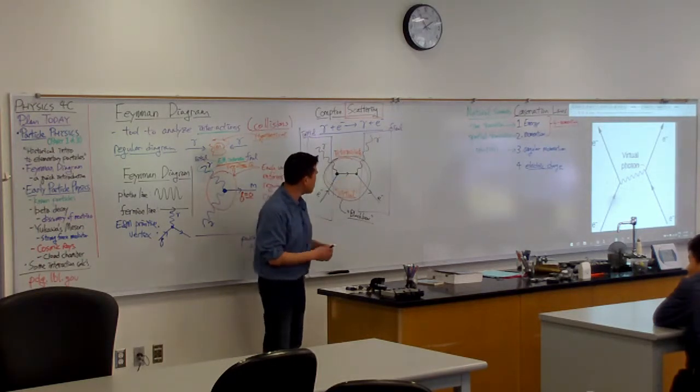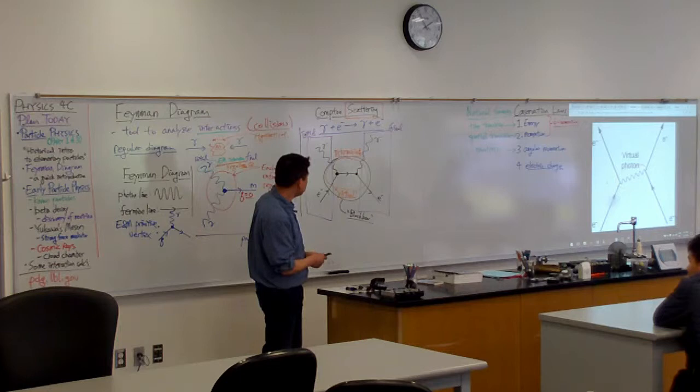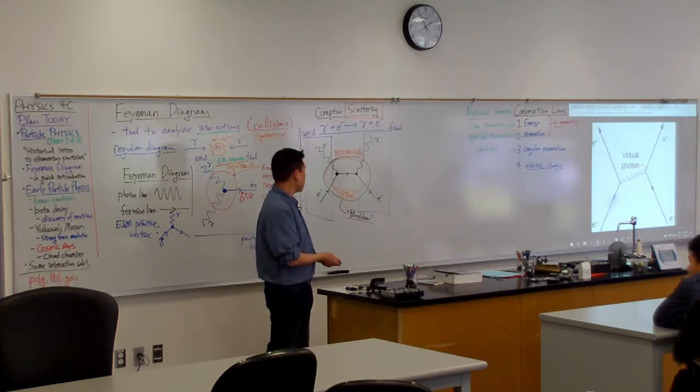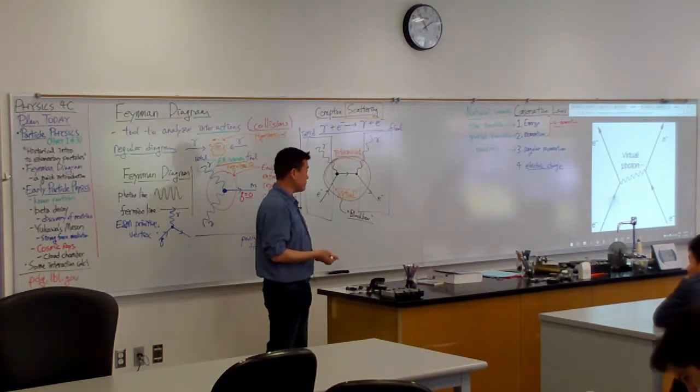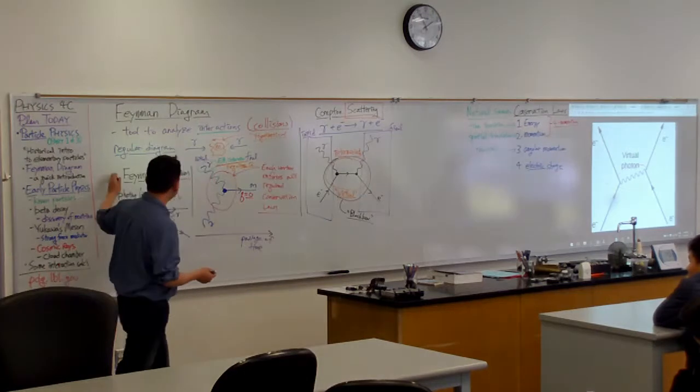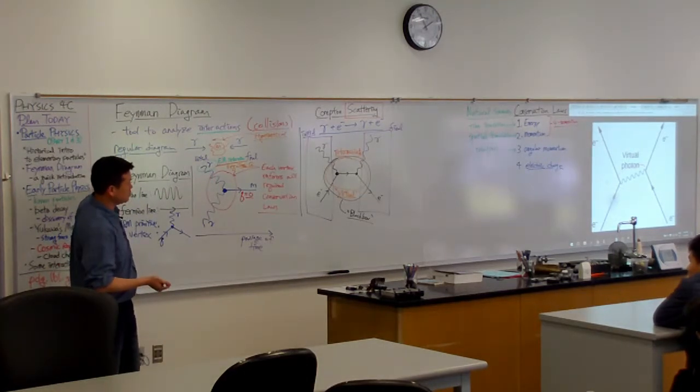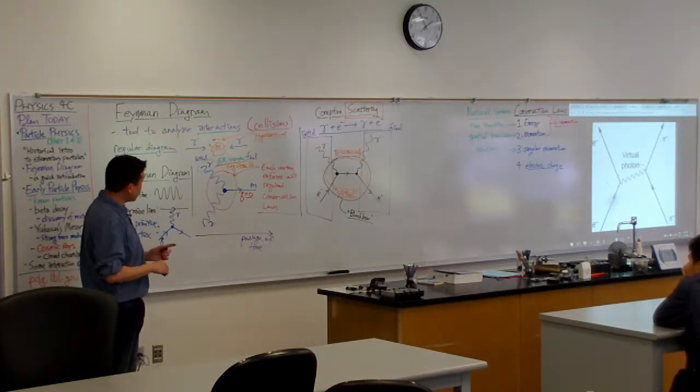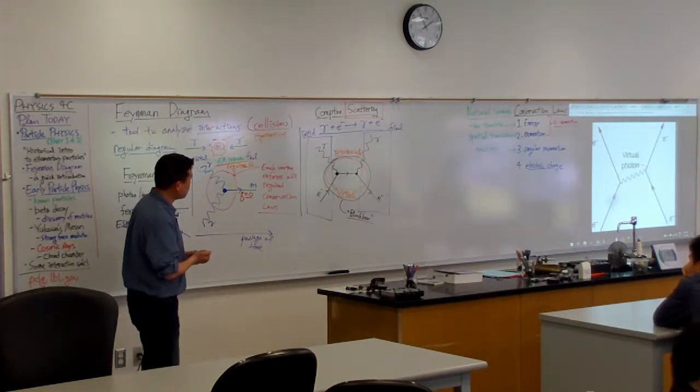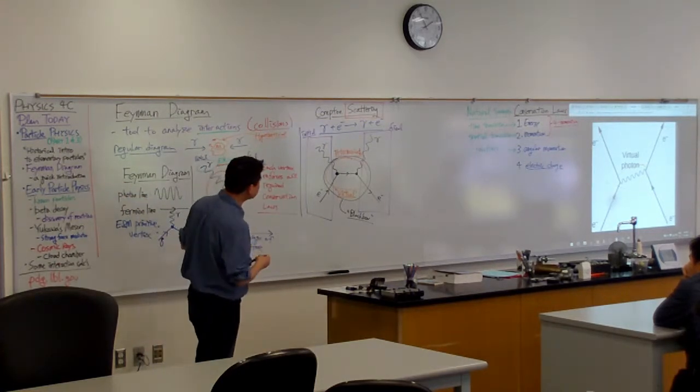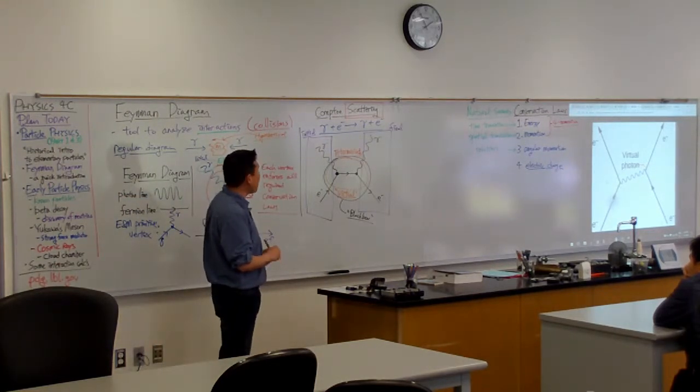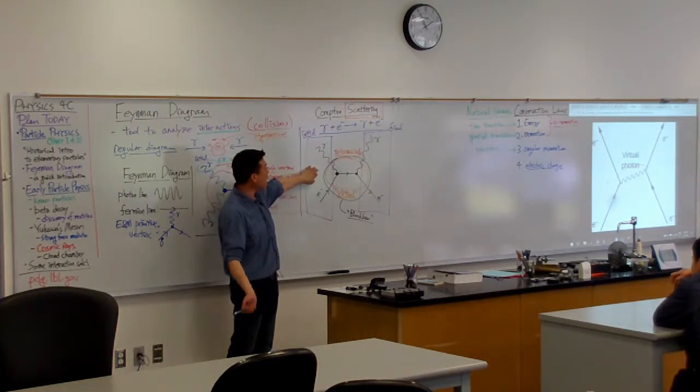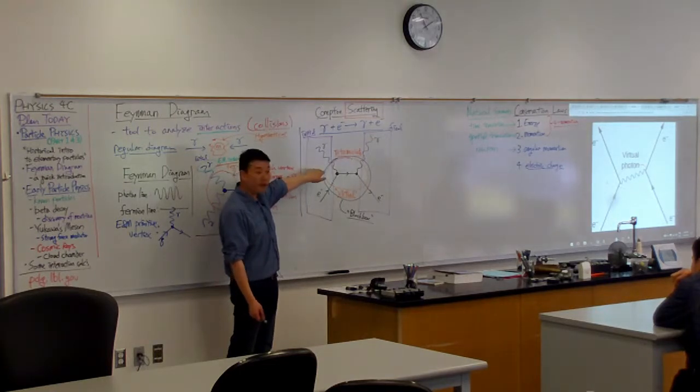So I guess let me leave that there. I think we can talk more about it as we get more into particle physics. But I needed to introduce this Feynman diagram as a tool that we use to illustrate different processes. I guess the one last thing I can probably mention before we're going to actually start talking about particles is how to get, if we have one known process, how to get different kinds of processes that are related to this one known process.